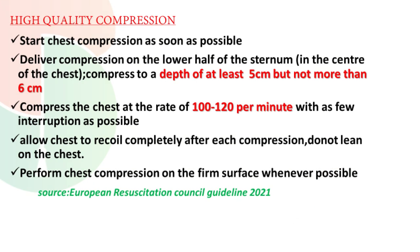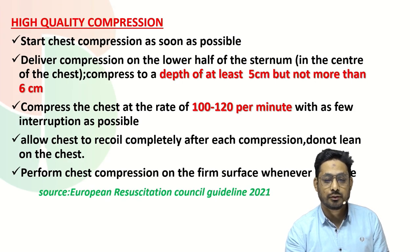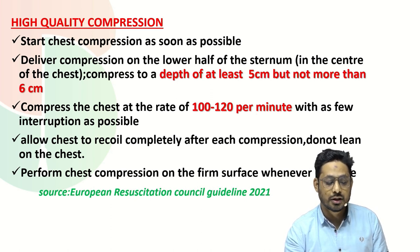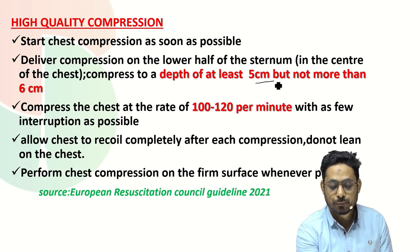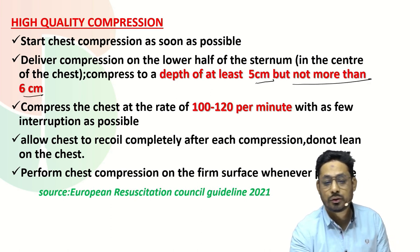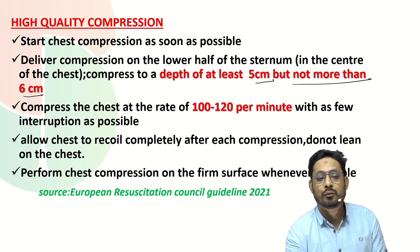While dealing with this question, let us discuss high quality compression. The compression-to-ventilation ratio is 30 compressions followed by 2 ventilations. The components of high quality compression are: start chest compressions as soon as possible with no delay. If you see abnormal or absent breathing, start chest compressions. Deliver a compression on the lower half of the sternum, at the center of the chest. The compression should be to a depth of at least 5 centimeters but not more than 6 centimeters — this is a very important component of high quality CPR.